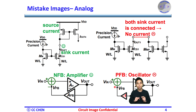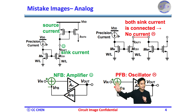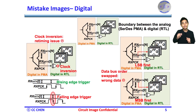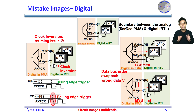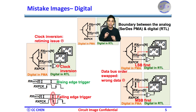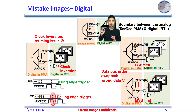In addition to the analog mistake examples, could you think about any digital mistake examples? Usually the SerDes PMA will verify in SPICE. But the register transfer level RTL in digital circuit design must be designed in a digital flow. Lots of miscommunications could happen at the boundary between the analog portion of the SerDes and RTL in the digital block.